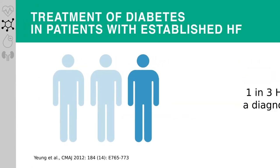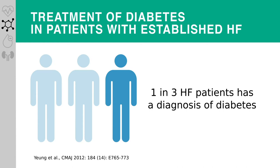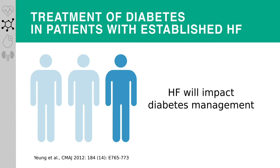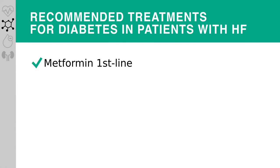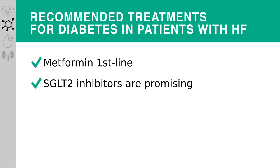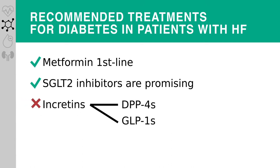How does heart failure affect the management of glycemic control in patients with diabetes? Metformin is still considered as the first-line pharmacological therapy for type 2 diabetes. It is effective, it has a known safety profile, and it is well tolerated in patients with heart failure. SGLT2 inhibitors are promising agents for the treatment of diabetes in patients with heart failure, with ongoing trials that may inform future recommendations. The CCS does not recommend the use of the DPP-4 inhibitor saxagliptin, or the additional use of a GLP-1 agonist in patients with or at risk for heart failure.